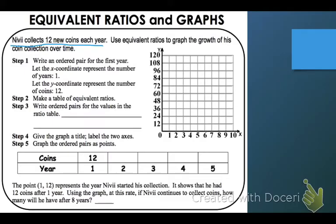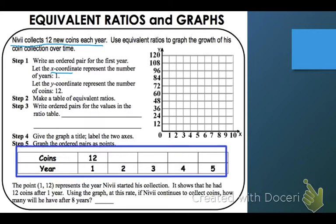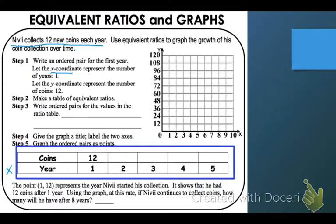So first one, it says write an ordered pair for the first year. Here, let X coordinate represent the number of years. So I'm going to go down here, and I see this chart. That's my ratio table, and it wants years to be X, and it says let Y be coins. So we're going to do Y coordinate is coins.